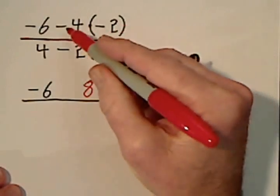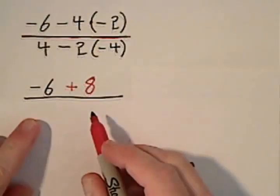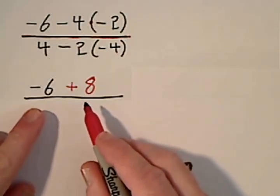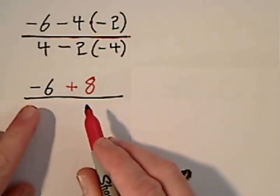So I said negative 4 times negative 2 yields a positive 8. And now by default, at this point, it's addition or subtraction because no other operation is indicated.